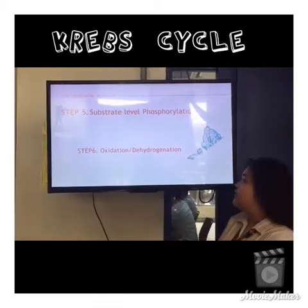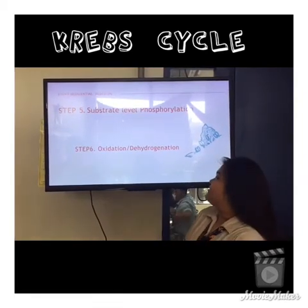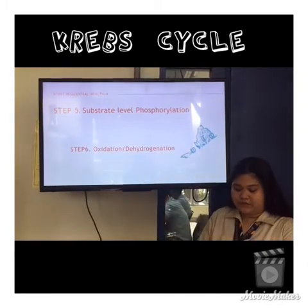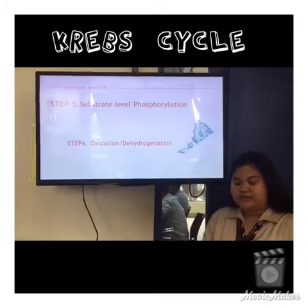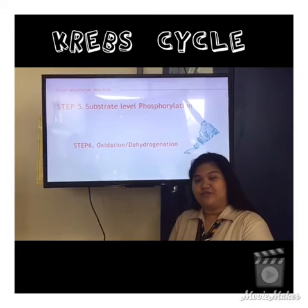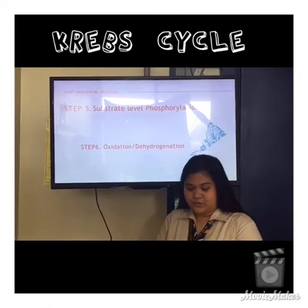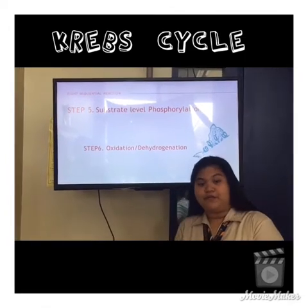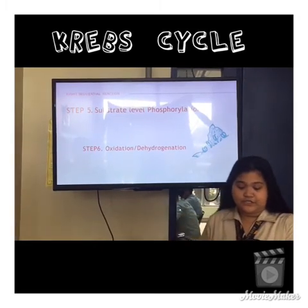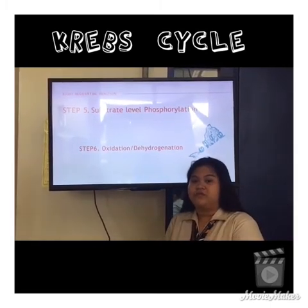Step six is oxidation or dehydrogenation. Succinate is oxidized, and two hydrogen atoms are released to convert FAD into FADH2. The resulting compound is fumarate.